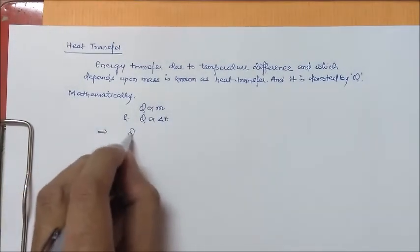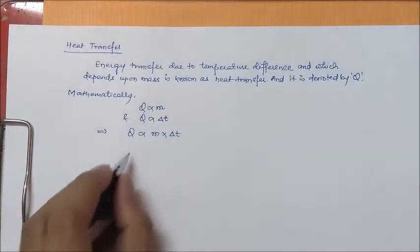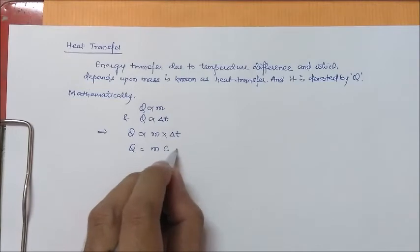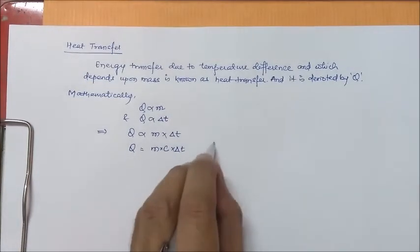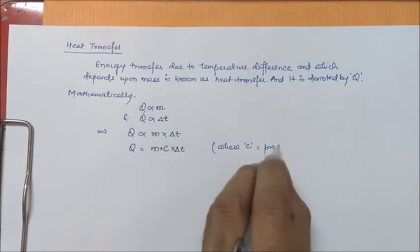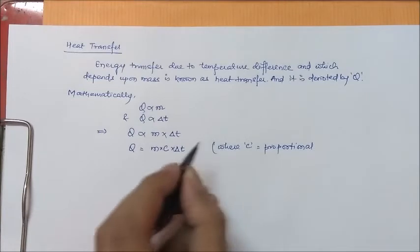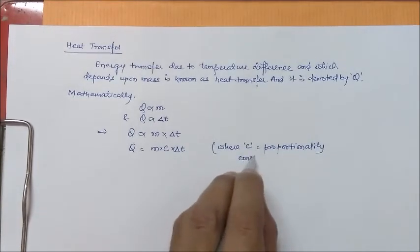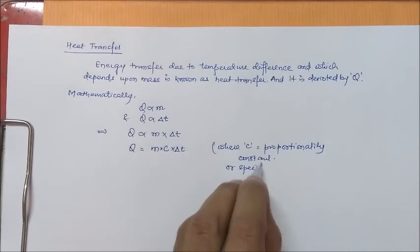This implies that Q is directly proportional to mass into del t, or it can be written as Q is equal to m c del t where c is the proportionality constant or specific heat.